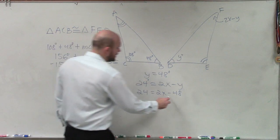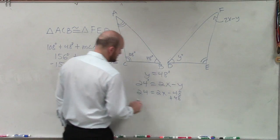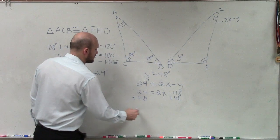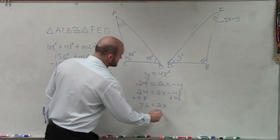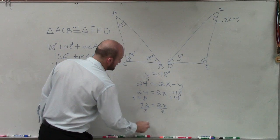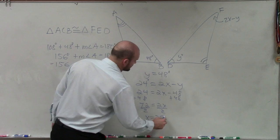So now I'll add 48 to both sides. Therefore, that equals 72 equals 2x divided by 2, divided by 2. x equals 36.